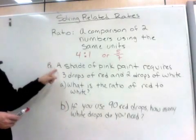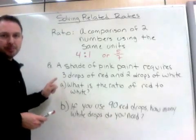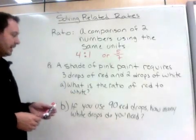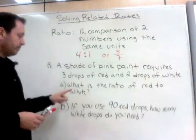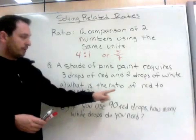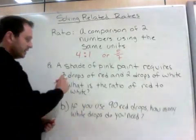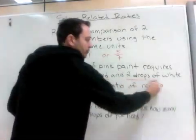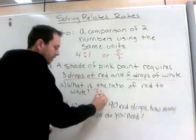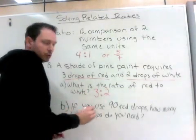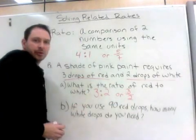Now let's see this as an example. A shade of pink paint requires 3 drops of red and 2 drops of white. What is the ratio of red to white? So red first, white second, because the question asks, what is the ratio of red to white? Now the question tells us it is 3 drops of red, 2 drops of white. So our ratio is 3 to 2, or in fraction form, 3 over 2.